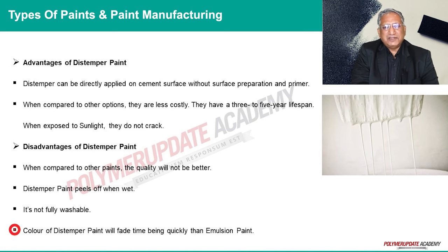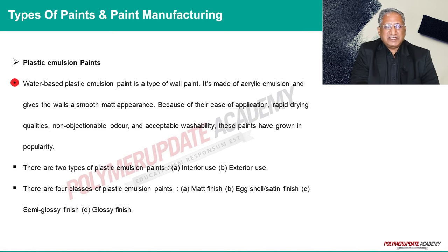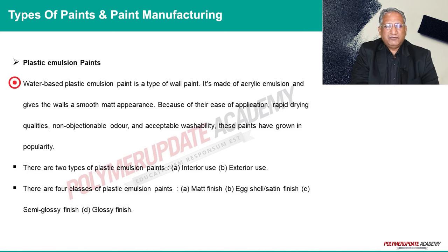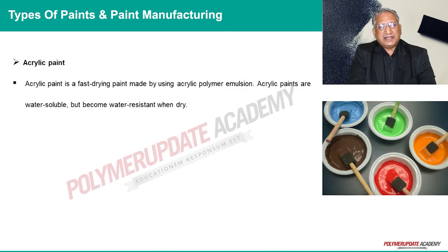Plastic emulsion paint is a water-based wall paint based on acrylic emulsion that provides a smooth matte finish. These paints have gained popularity due to ease of application, quick drying, non-objectionable odor, and good washability. Acrylic paint is a fast-drying paint made using acrylic polymer emulsion; acrylic paints are water-soluble but become water-resistant when dry.